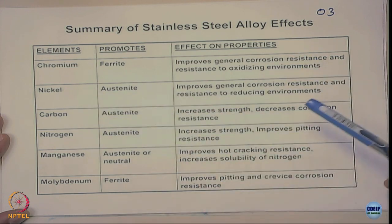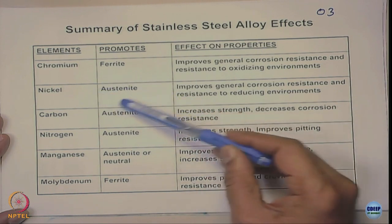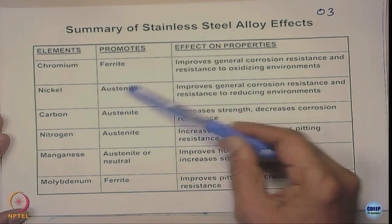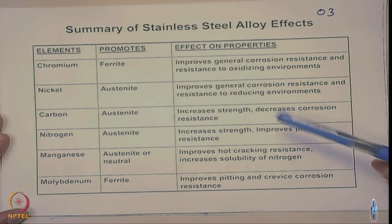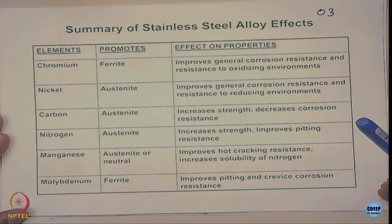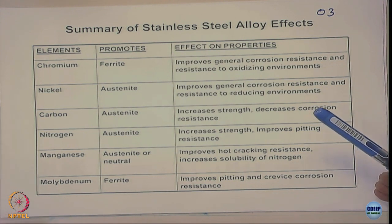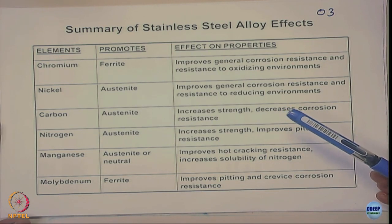Chromium is the most important alloying element — it promotes the ferrite phase. Stainless steels are classified based on crystal structure. Adding only chromium to iron forms a ferritic stainless steel with a BCC structure. Nickel is another important constituent which stabilizes austenite — an FCC phase — and also improves corrosion resistance. Carbon is present and increases strength, though it is also the real reason why intergranular corrosion of stainless steels occurs.